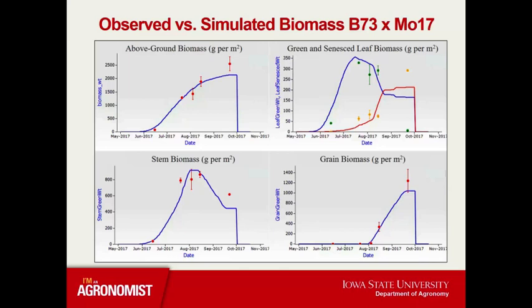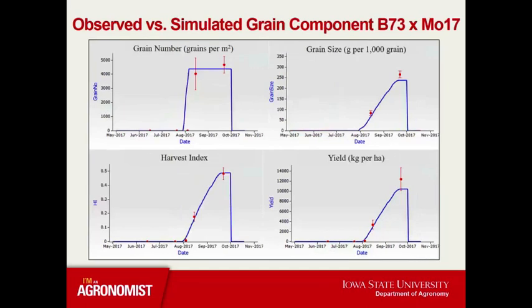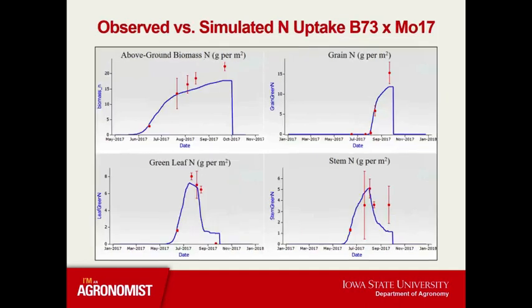This is stem biomass in grams per meter squared plotted across the 2017 season and grain biomass in grams per meter squared. Looking at grain components, we can look at grain number, grain size, harvest index — which we seem to be pretty good for just having one year of data — and yield in kilograms per hectare. We can also look at nitrogen uptake: above-ground biomass nitrogen, grain nitrogen, green leaf nitrogen, and stem nitrogen.